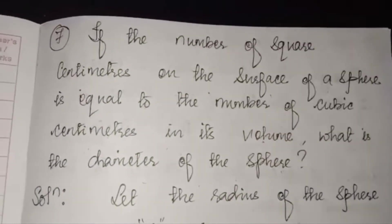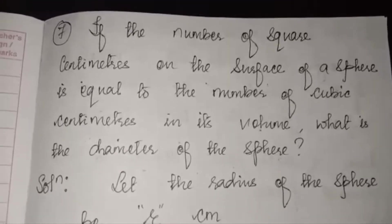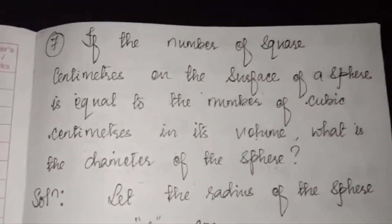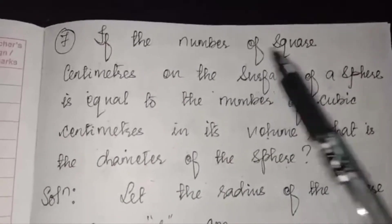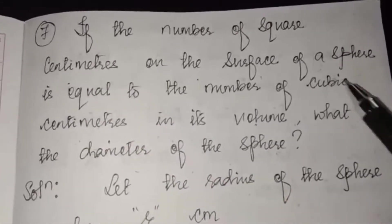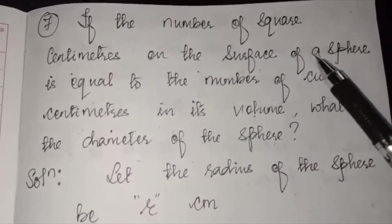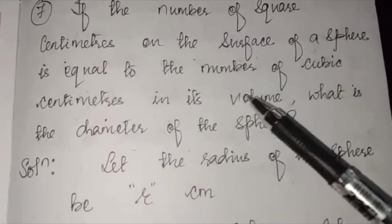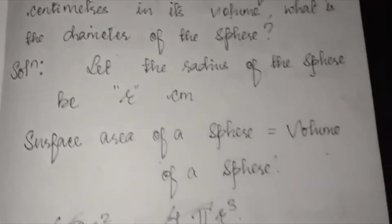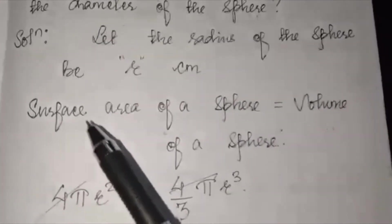Good morning class 10. We have already started the new exercise and in that exercise you are solving questions on spheres. We will start from question number 7: if the number of square centimeters on the surface of a sphere is equal to the number of cubic centimeters in its volume, the surface area and volume of the sphere are equal. You have to find its diameter. Let the radius of the sphere be small r centimeters.